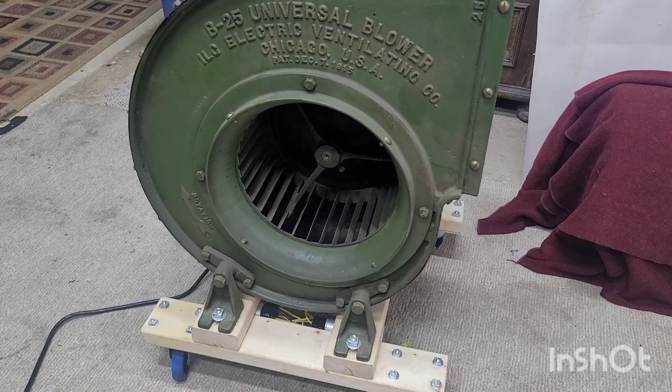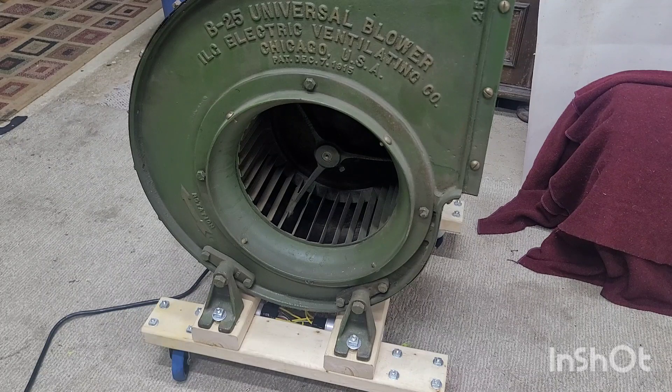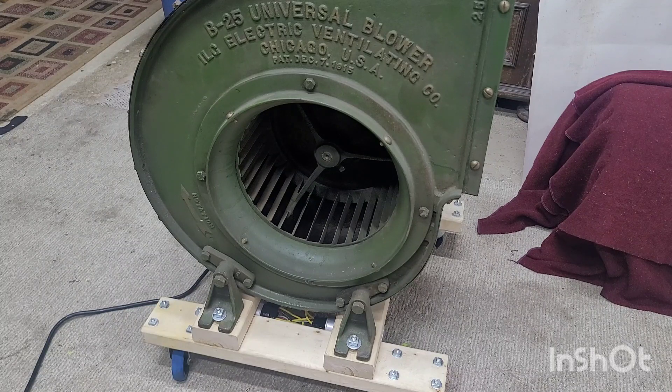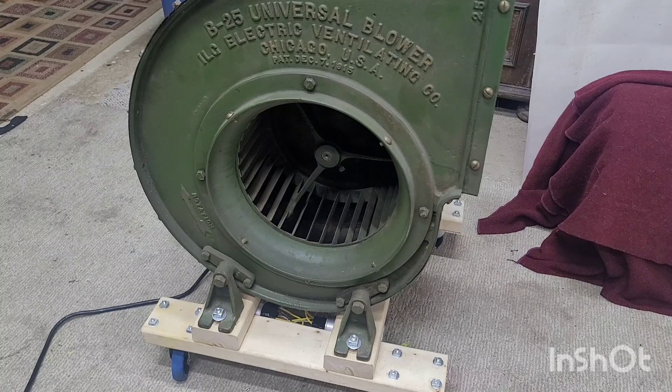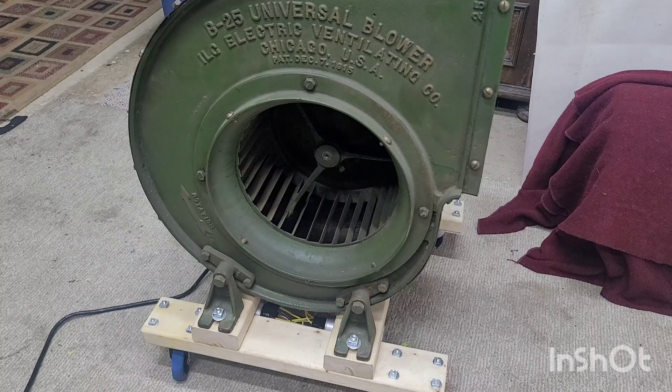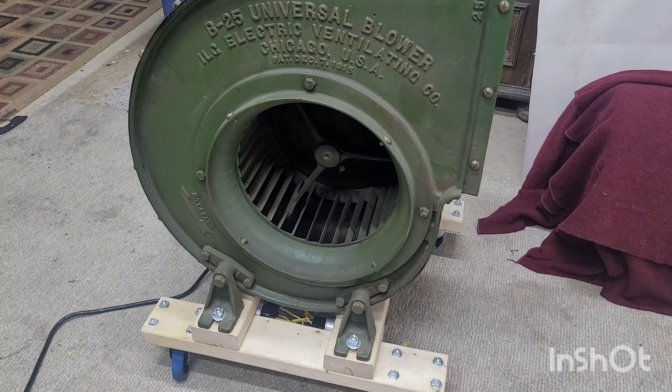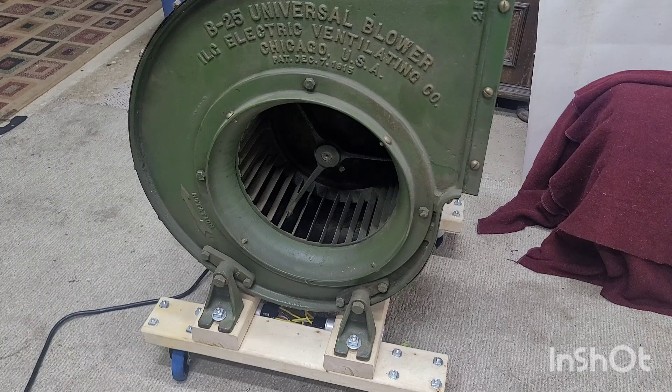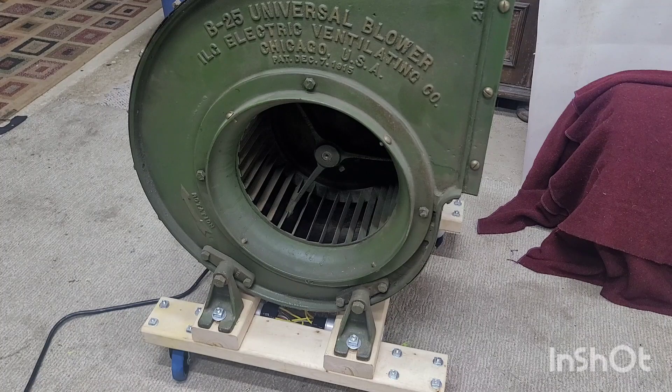Hello everyone. In today's video I wanted to go over the ILG B25 blower again. This time I've made a static phase converter for it. This is normally a 220 volt three-phase motor, but I now have it set up so I can run it off a 120 volt single-phase wall receptacle. So without further ado, let's get into this project.